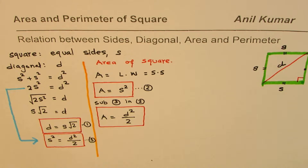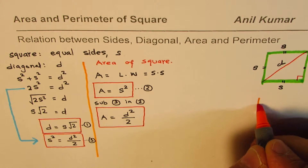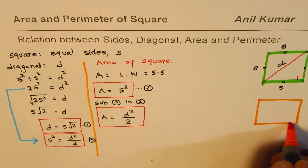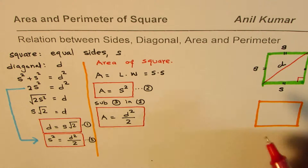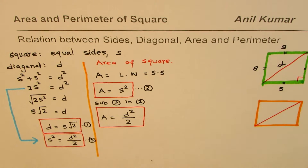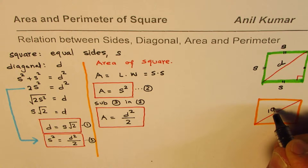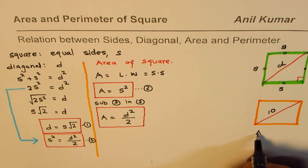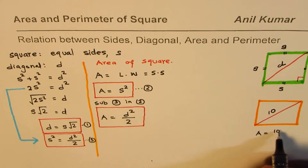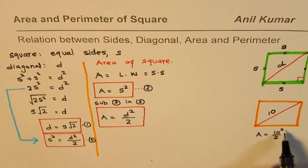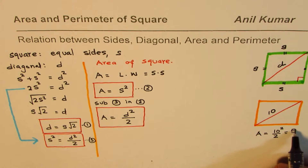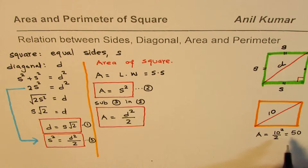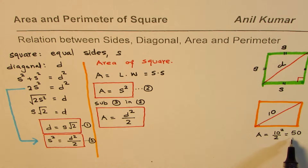Let me give a concrete example. Suppose we have a square whose diagonal is 10. Using our formula, Area = D²/2 = 100/2 = 50 square units. So directly from the diagonal, without many intermediate calculations, we can find the area — that's the huge advantage.